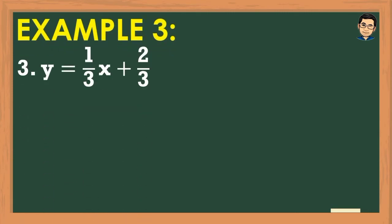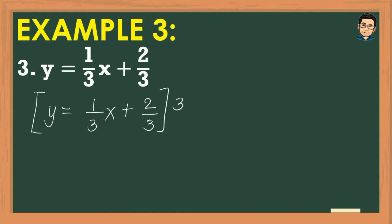For number 3, y = ⅓x + ⅔. We need to find the LCD. Since both denominators are 3, the LCD is automatically 3. We rewrite the equation and multiply by 3 to eliminate the denominators. So 3y = (⅓x)(3) = x, and (⅔)(3) = 2, giving us 3y = x + 2. But is this the final answer? No.